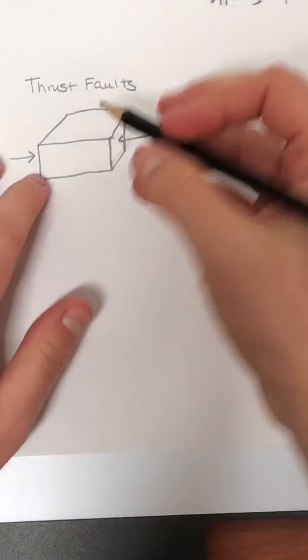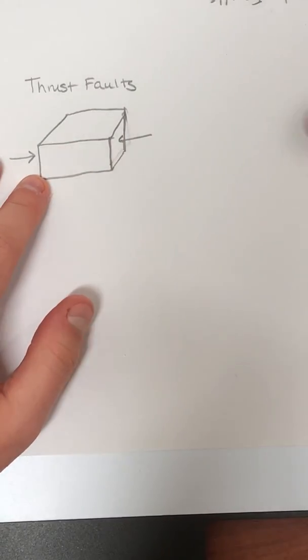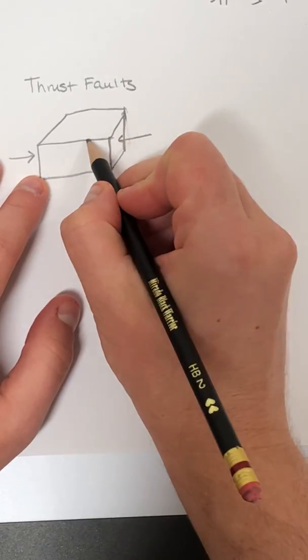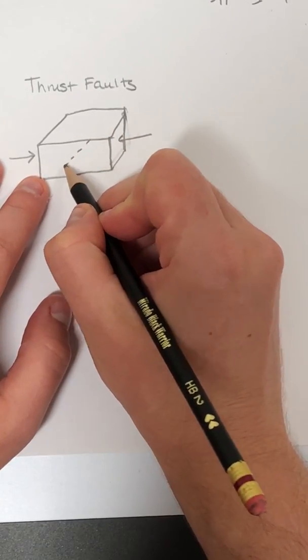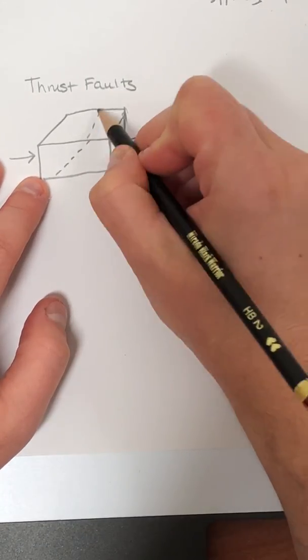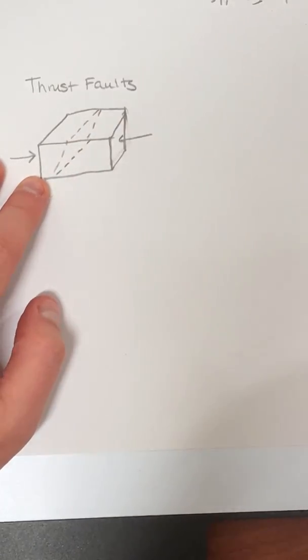And so faulting, thrust faulting, is where you push them like this and your fingers would slide together. So you've got to create a plane that cuts this block where in that plane this left side of the block is gonna slide up.